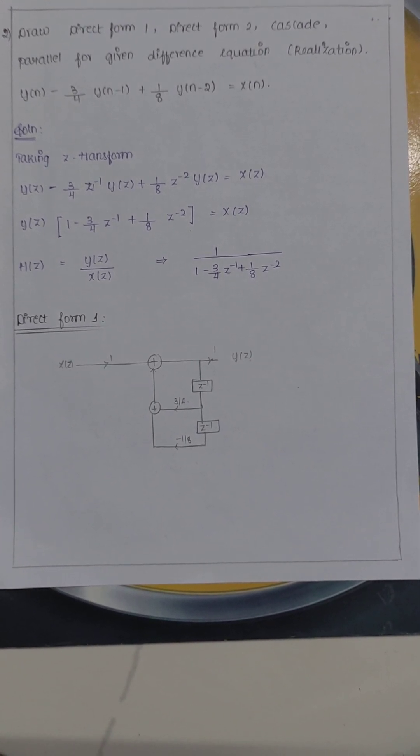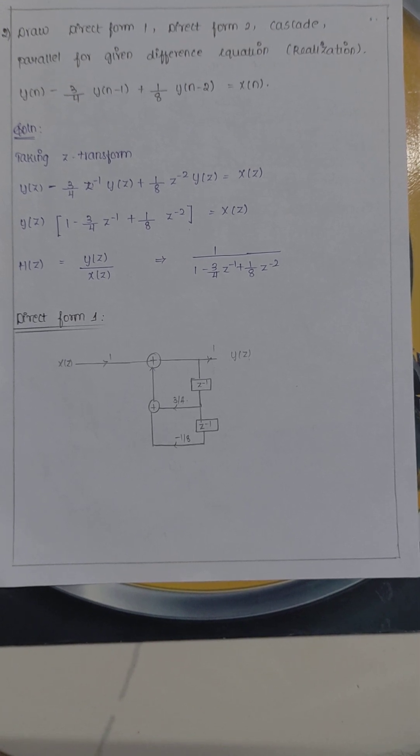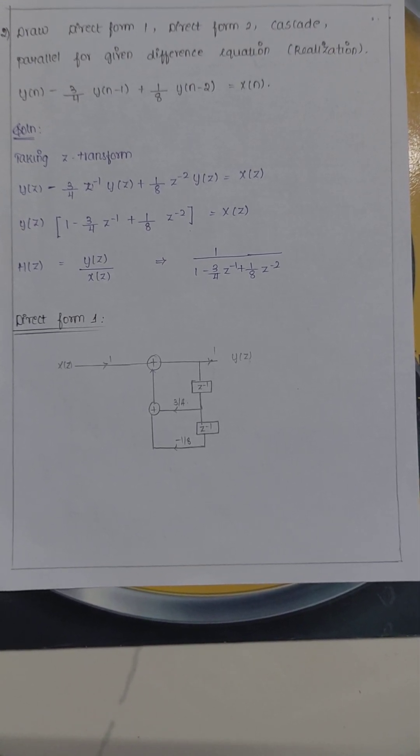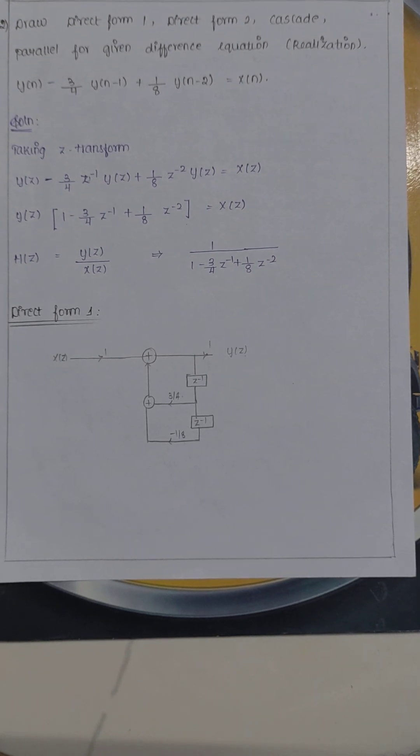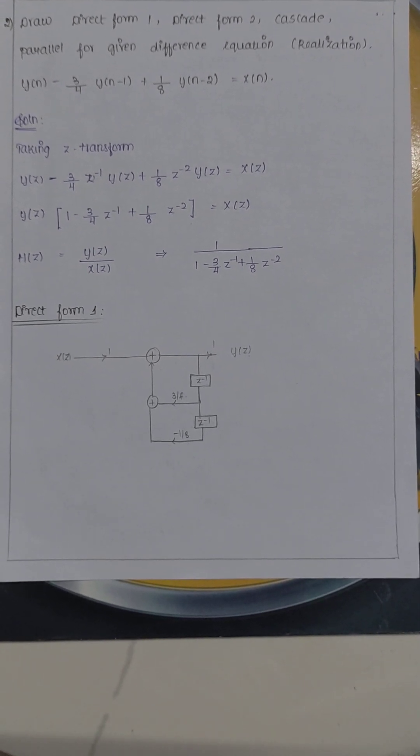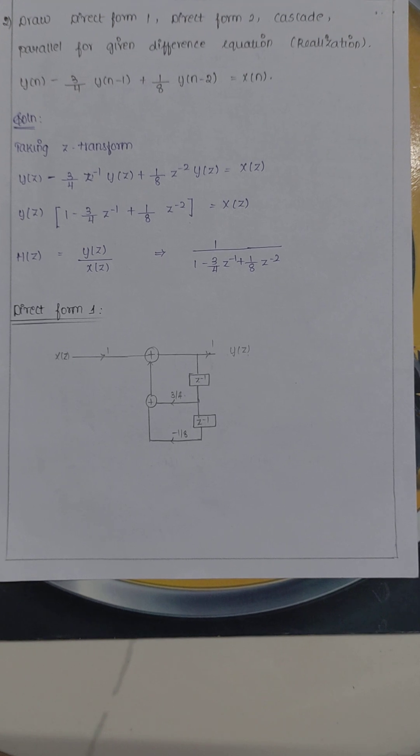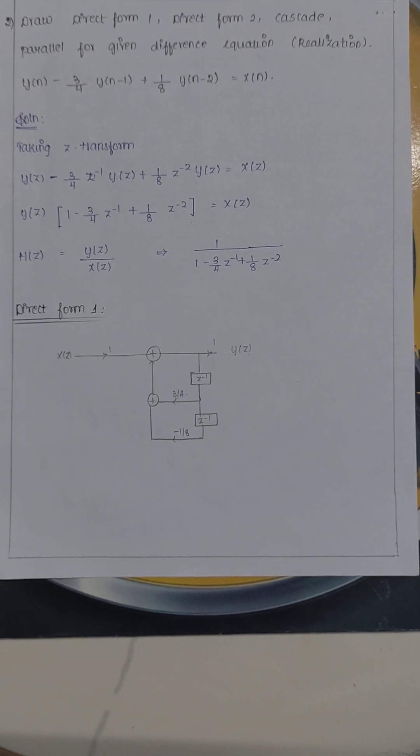I am going to give the video lecture on the topic signals and system under chapter 5, question structure or realization of the filters. Draw direct form 1, direct form 2, cascade form, parallel form for the given difference equation.